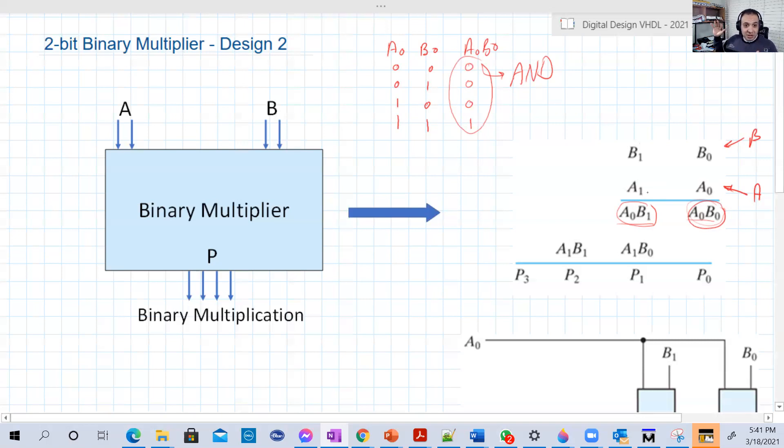Then what we do in decimal multiplications that we used to do all the time, we shift. So when we do the operations on A1, we shift. So this will be 0 here, then A1 B0, then A1 B1. What we do afterwards, we just add. We're going to add this one to this one.